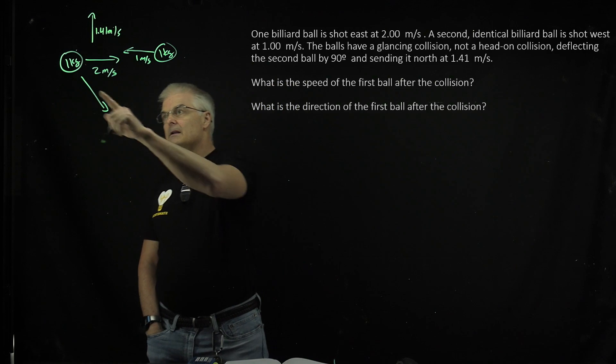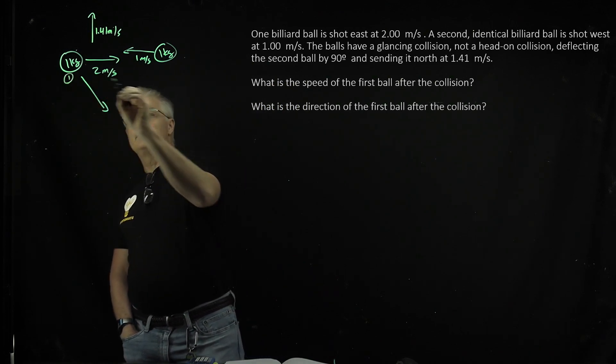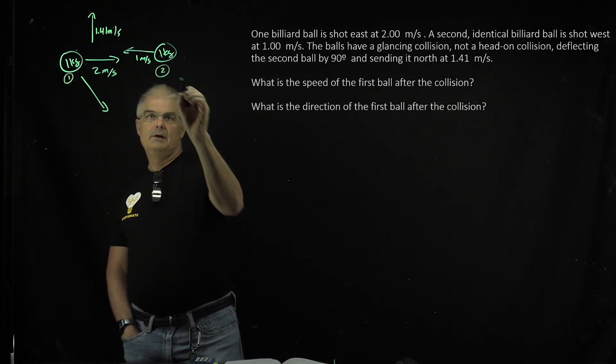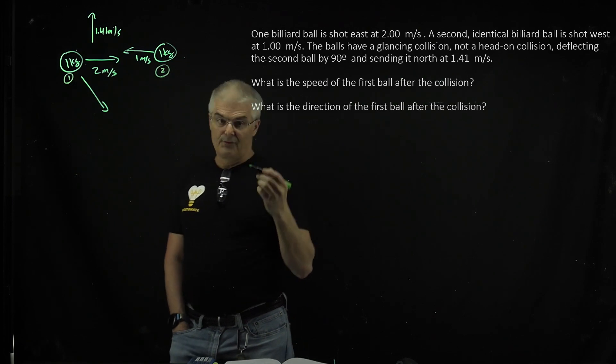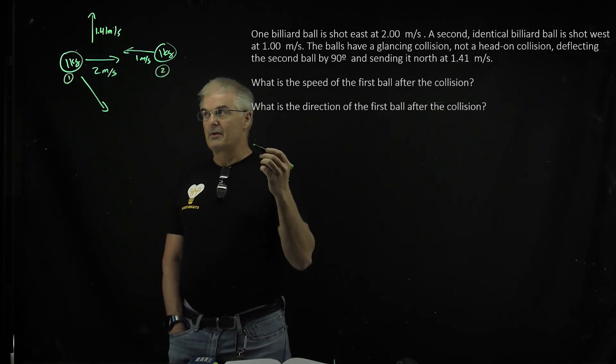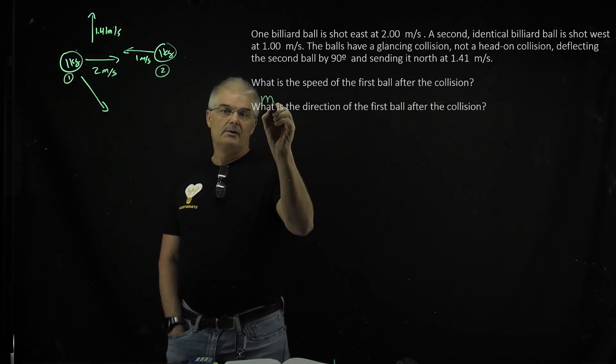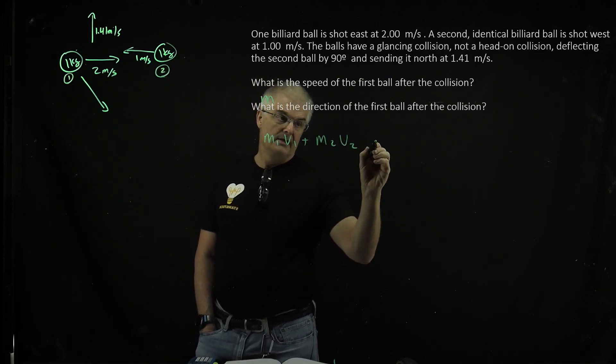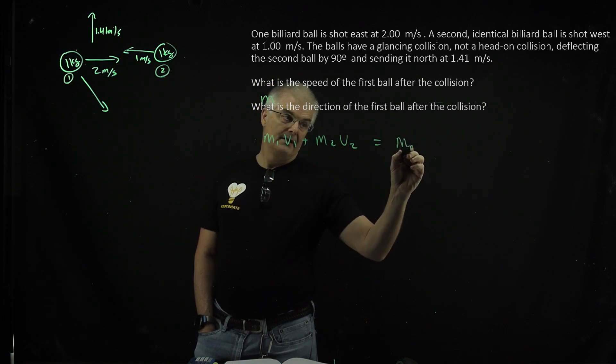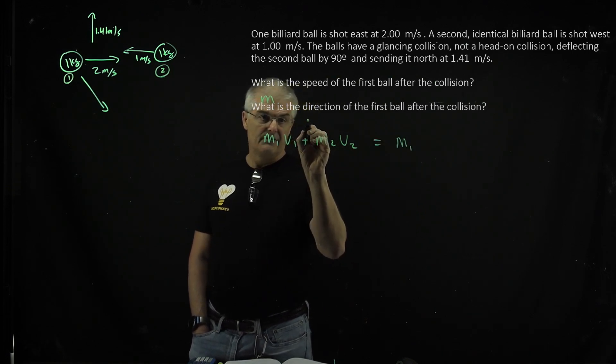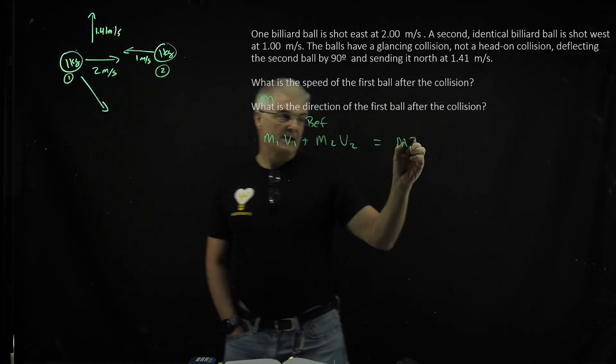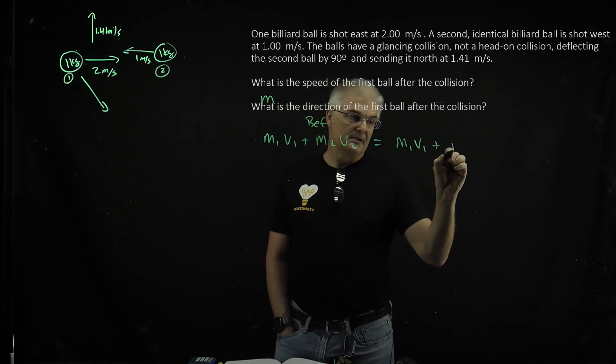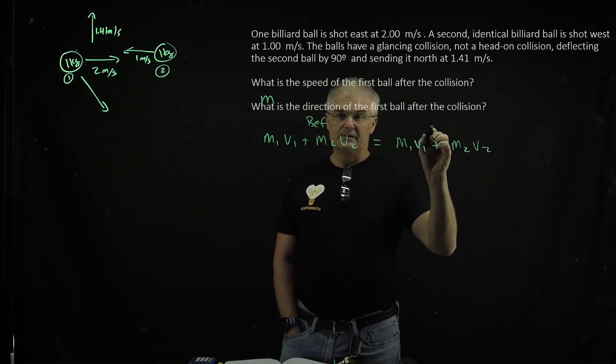So we're going to call this ball 1. We're going to call this ball 2. So the momentum before the experiment, right before they collide, is going to be m1v1 plus m2v2 equals, this is before, this is after, m1v1 plus m2v2.